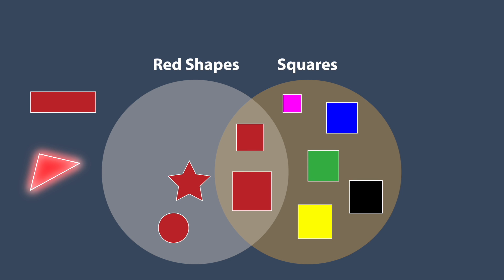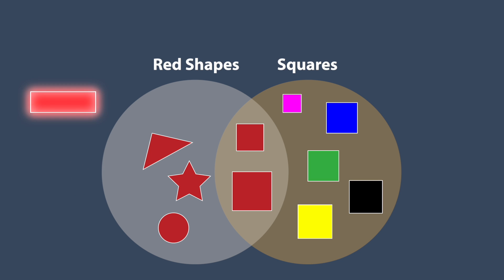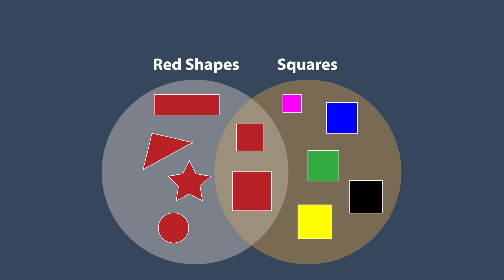We have a red triangle. A triangle is not a square, so it goes in the left circle. So we use the Venn Diagram to organize the red shapes, the squares, and the ones that are both.